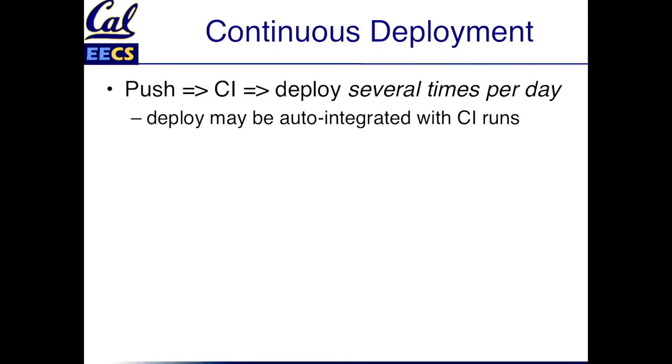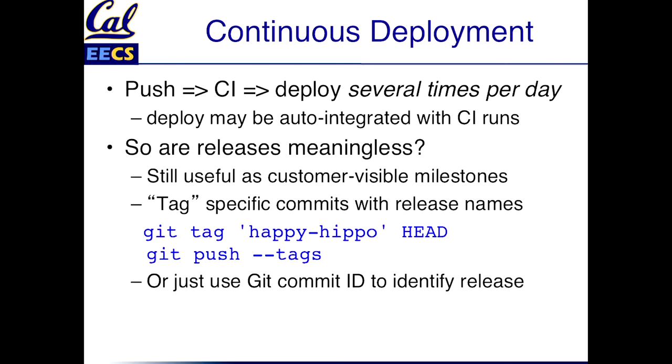The corollary to this is continuous deployment. If you're doing continuous integration — if every time you push to GitHub you're getting a bunch of tests run to qualify that nothing's broken — you might as well just say, well, if nothing's broken, what's the harm in pushing out the code at that point? And a lot of companies actually do just that. Their continuous integration is auto-integrated so that if the CI suite passes, it automatically deploys that code to production.